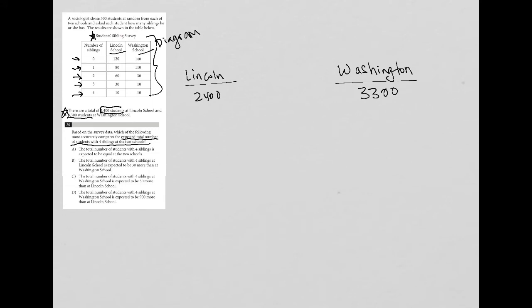Well, at Lincoln, from the Lincoln survey, we found that 10 out of the 300 had four siblings and 10 out of 300 as a percentage, which you actually don't have to use in this case, but I'll just go on with it. The percentage here is 3.3%. And we found the exact same data for Washington, right?